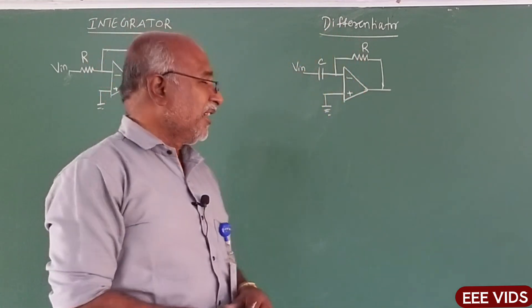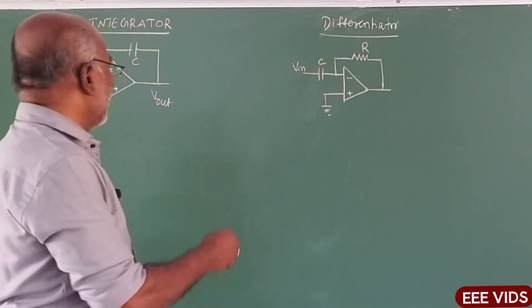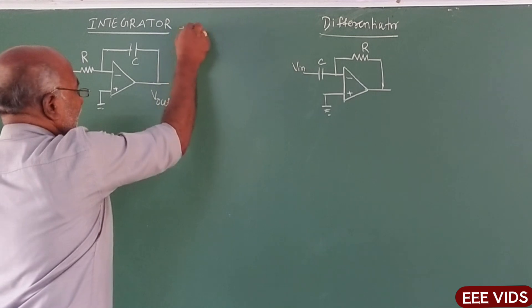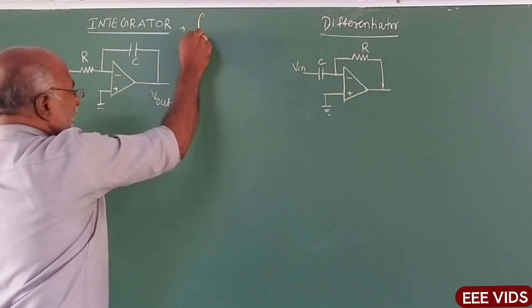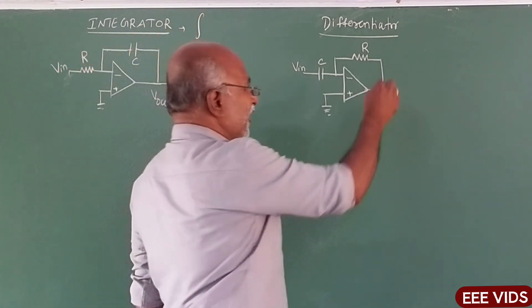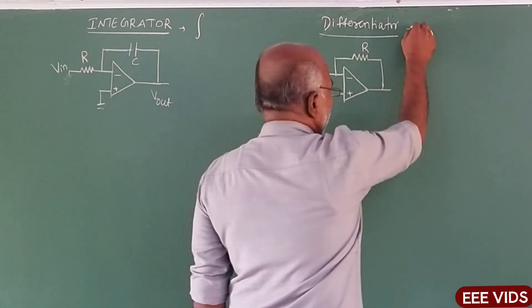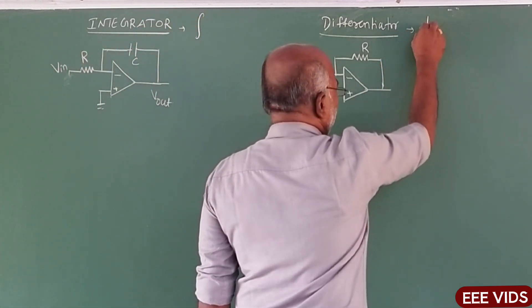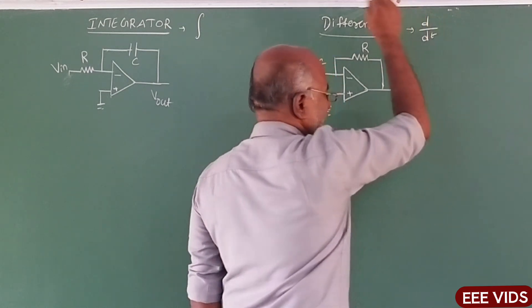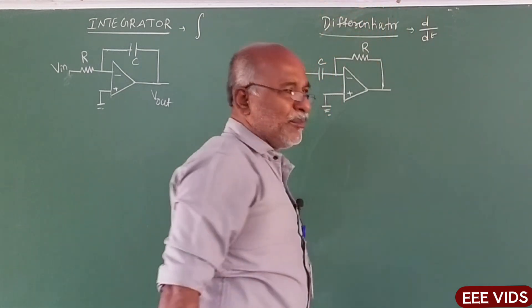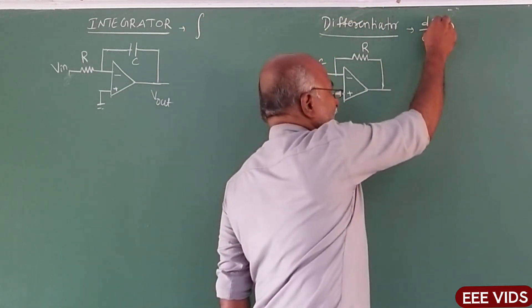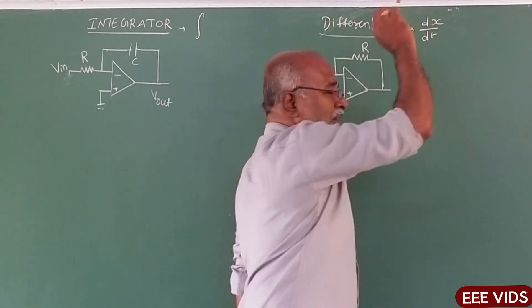So, integrate — formula. Integral symbol. So, the symbol for integration. Differentiation symbol: D by DT or DX. So, D by anything — DX by DT, any quantity. Differentiator of any quantity.